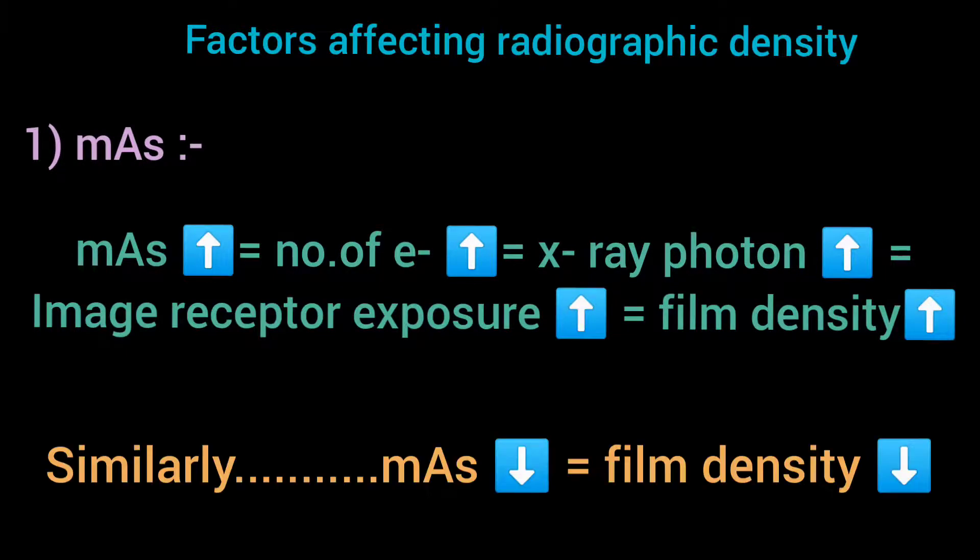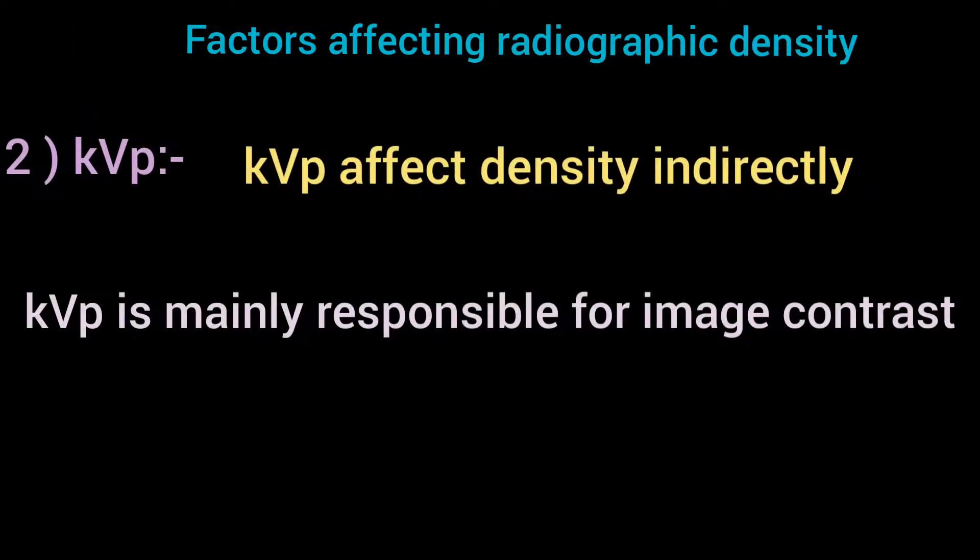Similarly, decreasing mAs decreases film density. kVP indirectly affects density, but remember it is mainly responsible for image contrast.